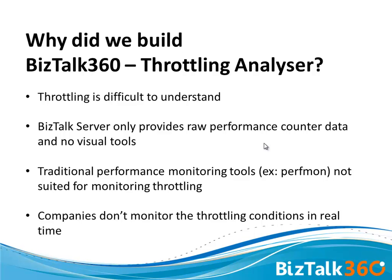Number five is system memory throttling. And it's not just those numbers — once you see that number, you need to dig deep into the specific area. For example, if it's process memory, you need to go and understand what the available system memory is and how much your process is using. So even for an experienced BizTalk person, it becomes a really difficult task to understand and optimize the system for throttling.